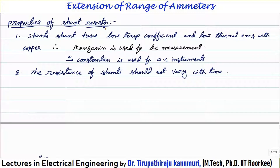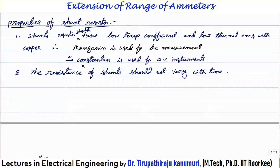The shunt resistor should have a low temperature coefficient and low thermal EMF with copper. In practice, manganin is used for DC instruments such as PMMC type, and constantin is used for AC instruments. This distinction is sometimes asked in competitive exams: for DC, manganin is used; for AC, constantin is used.